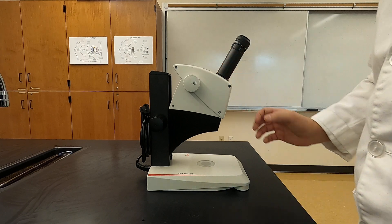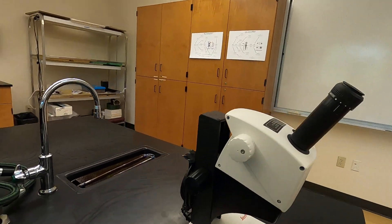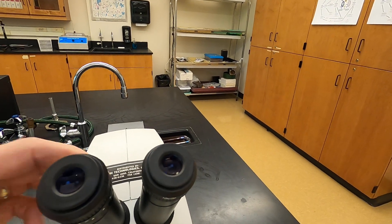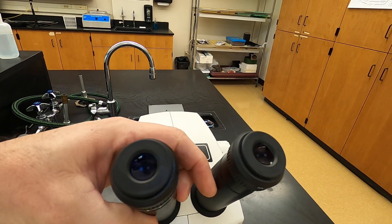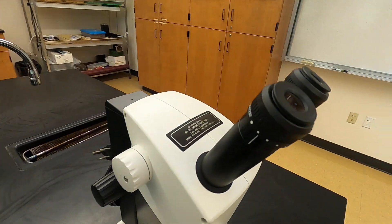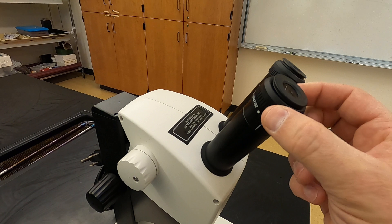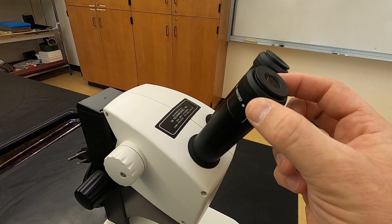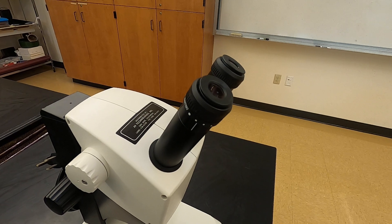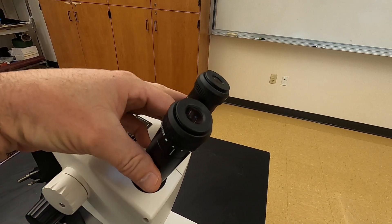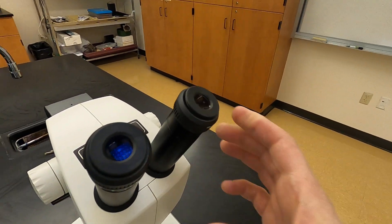Now for this, let me move over and show you here. We can actually adjust the ocular lenses like we did before for the interocular distance, and these microscopes do have a diopter adjustment as well that we can use to adjust for differences in vision between the left and the right eye. So you will be able to adjust both of those.